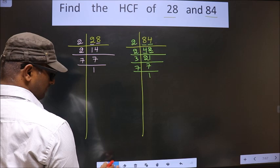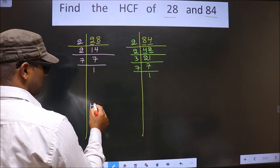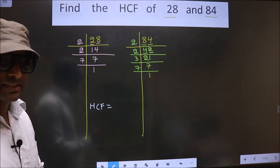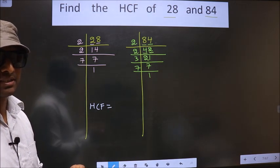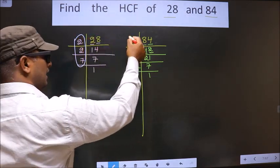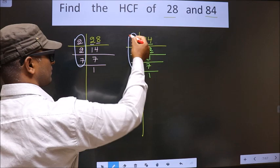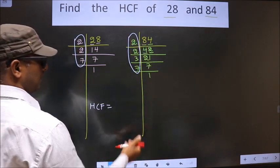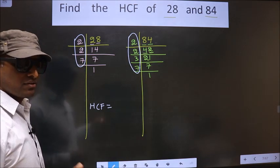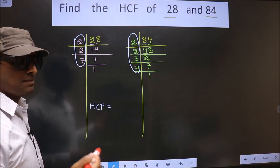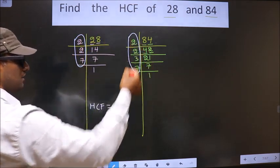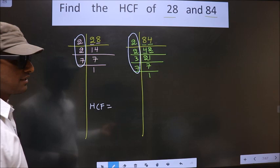So now our HCF is the product of numbers that are present here and also here. So now we should find the numbers that are present in these two places. I repeat, we should find the numbers that are present here and also here.